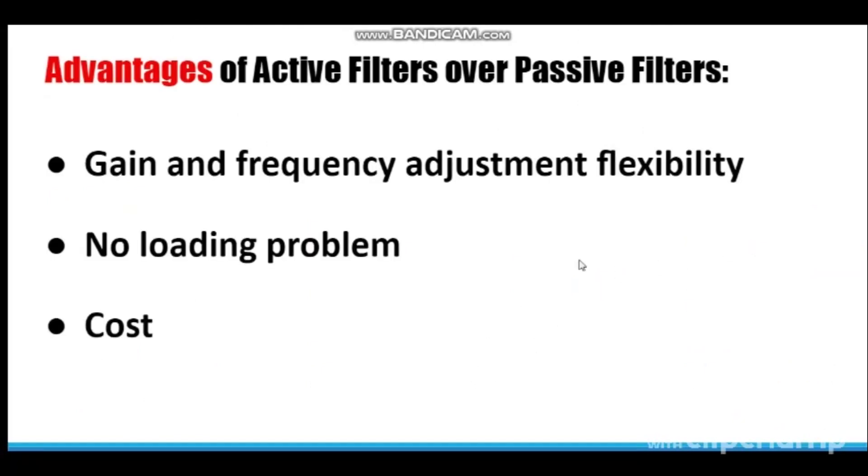So here we will be designing active filters using op-amps along with resistors and capacitors. So it is important that we know the advantages of active filters over passive filters. The first advantage here is gain and frequency adjustment flexibility. Since the op-amp is capable of providing a gain, the input signal is not attenuated as it passes the filter. In addition, in active filter it is easier to tune and adjust. The second one is no loading problem. Because of high input resistance and low output resistance of op-amps, the active filter will not cause loading of source or load. Third one is cost. Active filters are more economical than passive filters. This is because of the variety of cheaper op-amps available in the market and also the absence of inductors in the circuit.